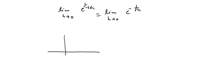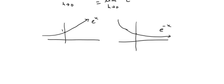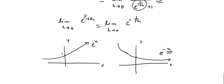We know that the graph of e^x has a y-intercept of 1. For the graph of e^(-x), it is a reflection: as x goes larger and larger, the value of e^(-x) gets closer and closer to 0. Here is the x-axis and y-axis for reference.